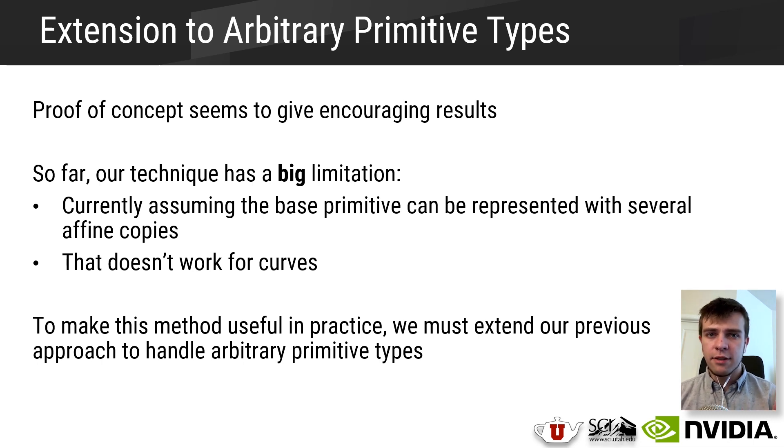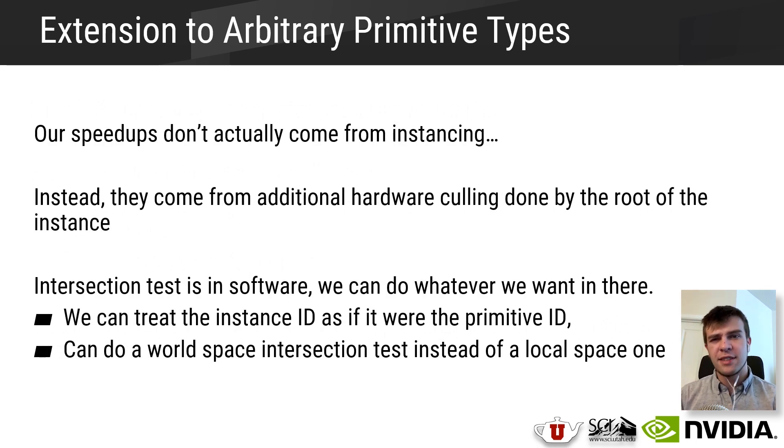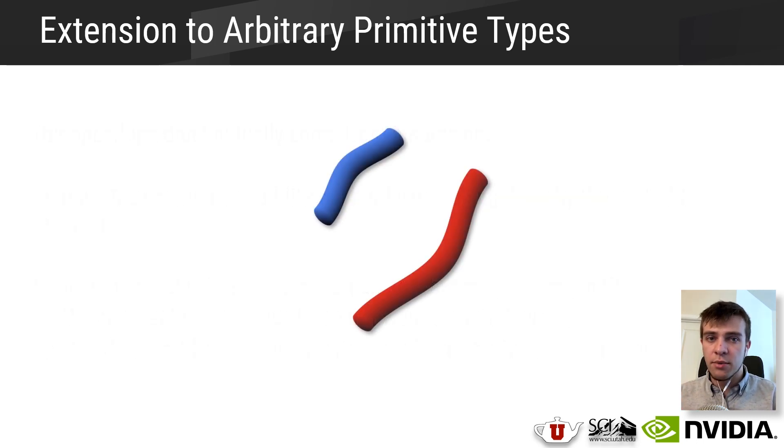Again, we can make several observations here. First, it's worth noting that our performance improvements don't actually come from the instancing itself. We don't actually benefit that much from reusing the same affine copy for each cylinder. But rather, our proof of concept benefits most from the additional oriented bounding box test culling step that's done in hardware. The second observation that we can make here is that since we're looking to support custom primitive types, we'll be implementing our intersection tests in software. And since the intersection test is in software, whenever a ray hits a bounding box containing our instance root node, we can do whatever we want at that point. So in particular, we can interpret the instance ID as if it were the primitive ID, and we can do a world space intersection test instead of a normal object space intersection test that a traditional instancing approach would do.